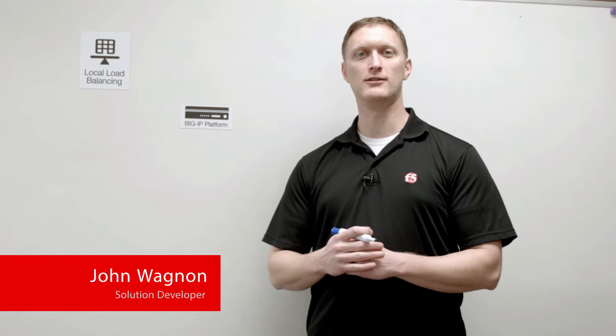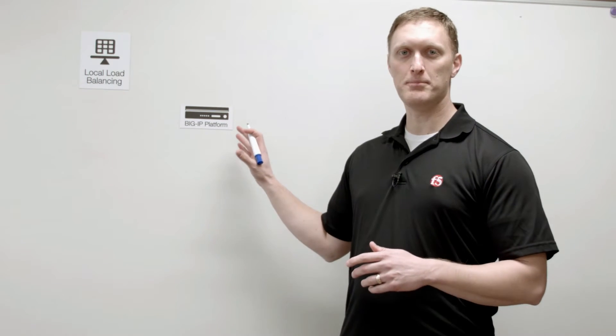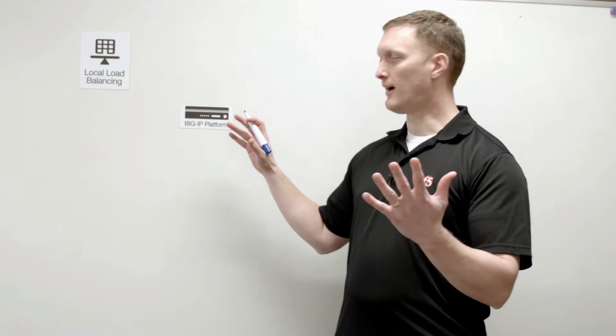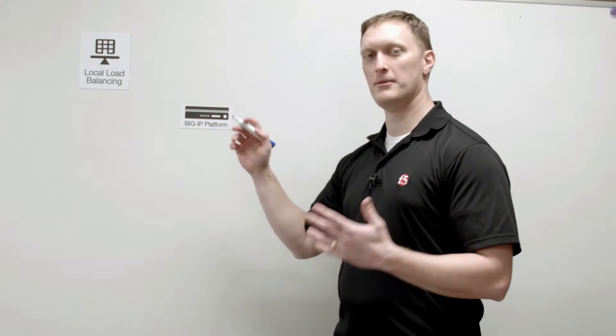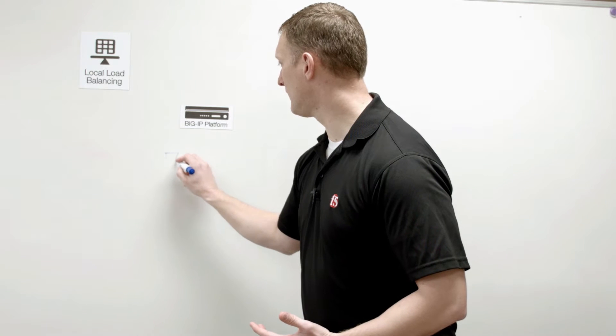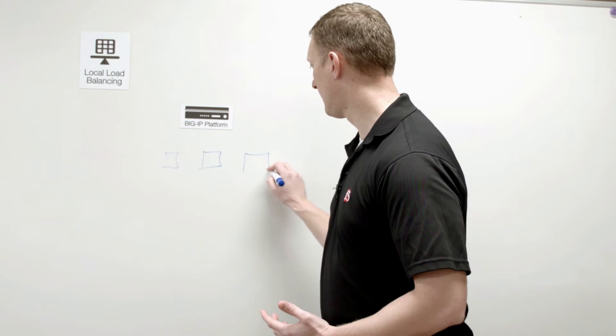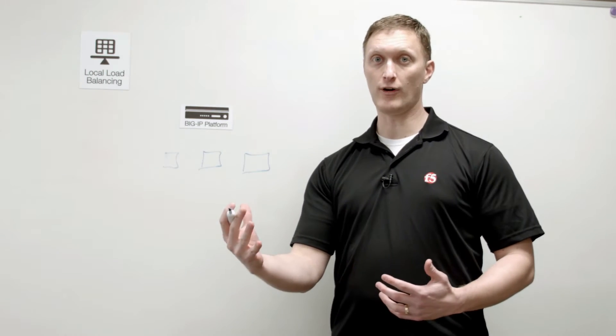Hey everybody, John Wagnon here with Dev Central. We are continuing our Whiteboard Wednesday videos on load balancing algorithms, and today we're going to talk about least sessions and ratio sessions load balancing algorithms. We have our BIG-IP platform here again, and the question is: as connections come in, where are they going to go? I'm going to draw three back-end servers here as an example.